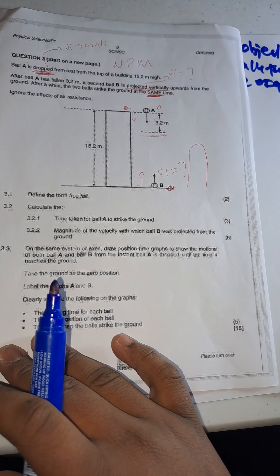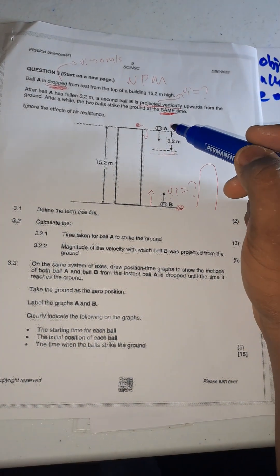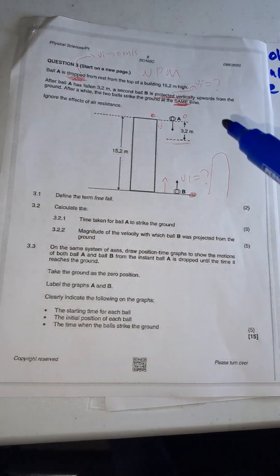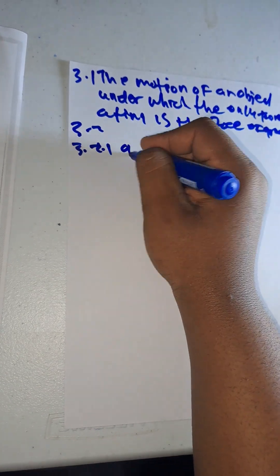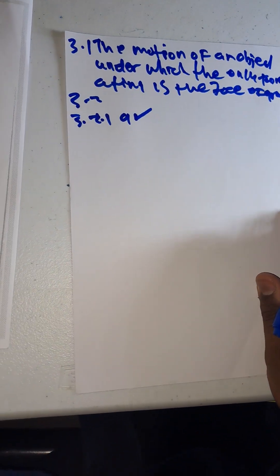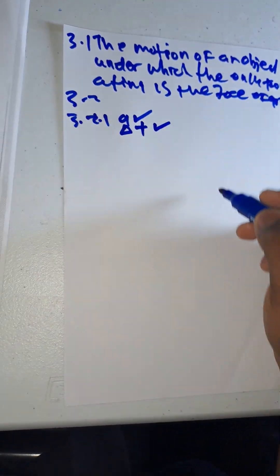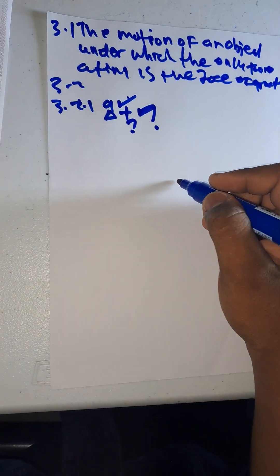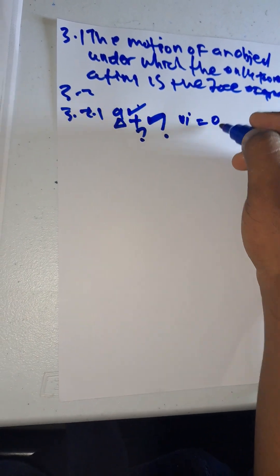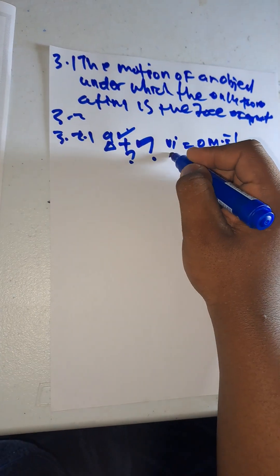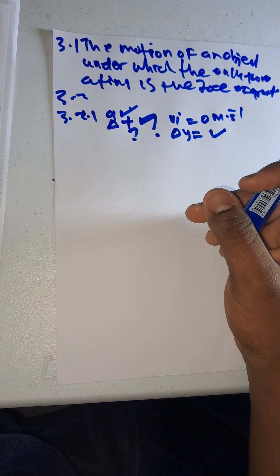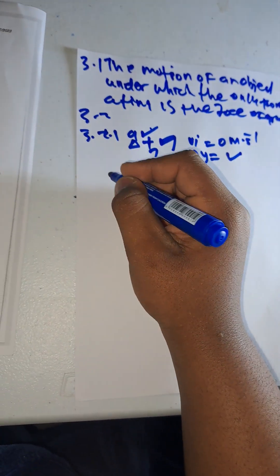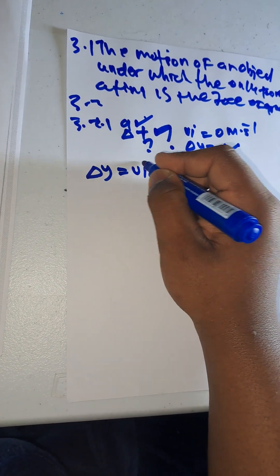Now for question 3.2, we need to find the time taken for ball A to strike the ground. Ball A starts at the top, passes the 3.2m mark, and strikes the ground. The total height is 15.2m, so Δy = −15.2m. Acceleration a = −9.8 m/s², initial velocity vi = 0 m/s because it was dropped, and time t is what we want. I'll use: Δy = vi·Δt + ½·a·Δt².